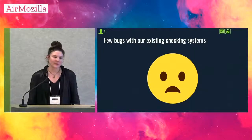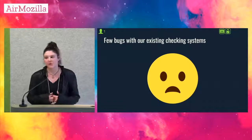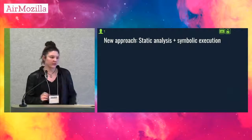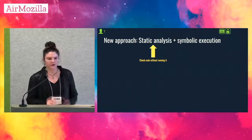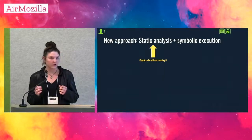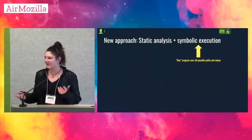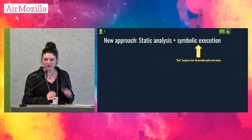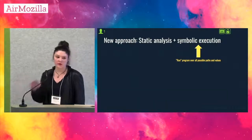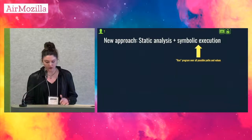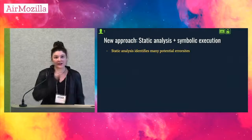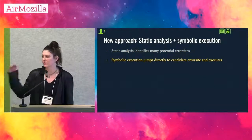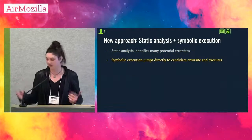This meant when we tried to find bugs in browsers with our existing systems, we could find a few, but they were sort of interesting but not that great. So we have a new approach that combines static analysis and symbolic execution. Static analysis you can think of as looking for buggy patterns in source code without running it, whereas symbolic execution conceptually runs a program over all possible inputs and all possible paths. Static analysis is pretty cheap and lightweight, while symbolic execution is very thorough but also very expensive. So first we use static analysis to identify many potential error sites cheaply and efficiently, and then use symbolic execution to jump directly to those error sites and figure out if the bug exists or not.